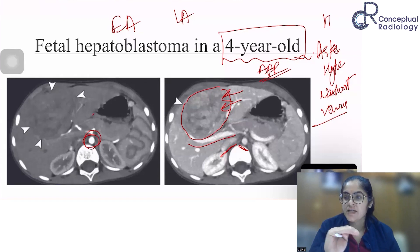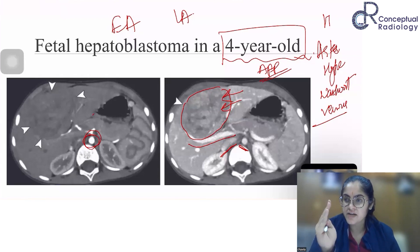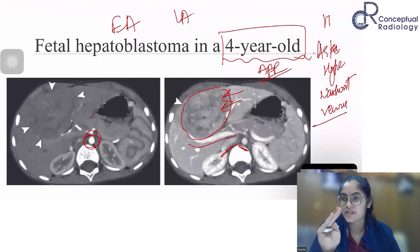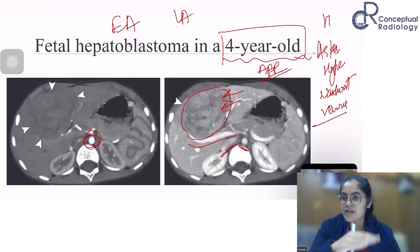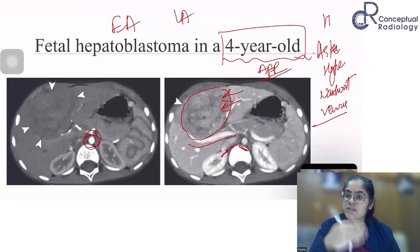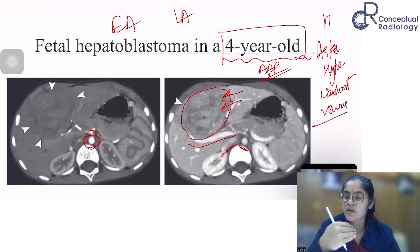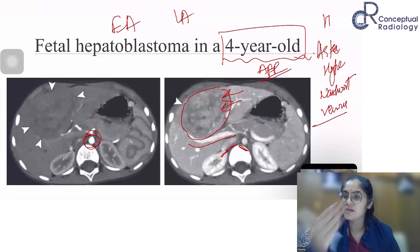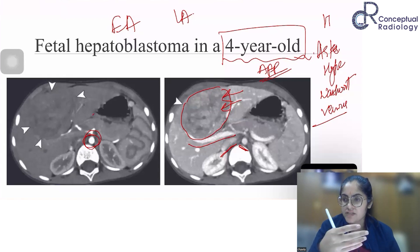If AFP levels are elevated, regardless of whether the lesion is cystic, solid, or partially cystic-solid, you can be more confident it is a hepatoblastoma. Once hepatoblastoma is ruled out with a normal AFP, the clinician will ask you about other possibilities — that is when other differentials come into play and your role as a radiologist becomes especially important.